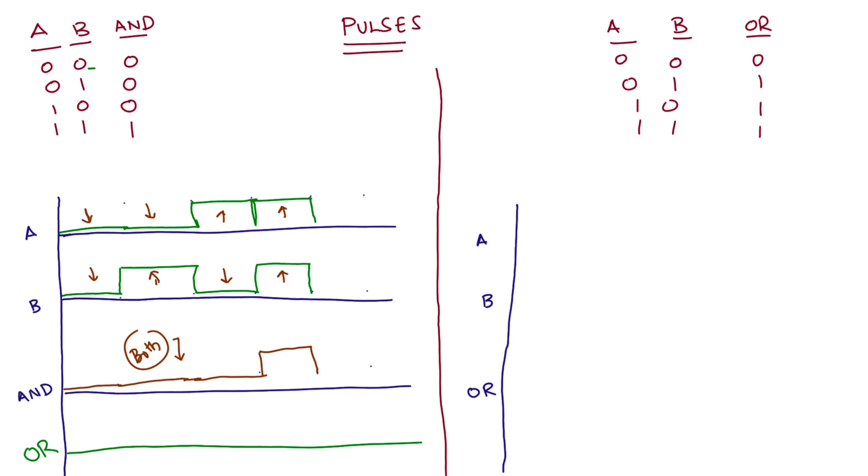Coming to the OR signal, it is only low when both the signals are low. Everywhere else, even if one of the signals is high, then the OR signal is going to be high.